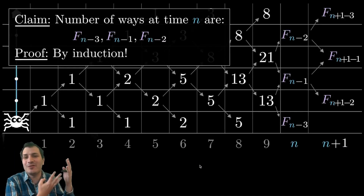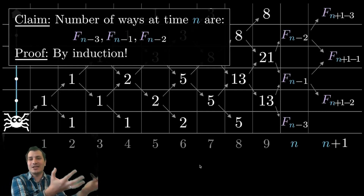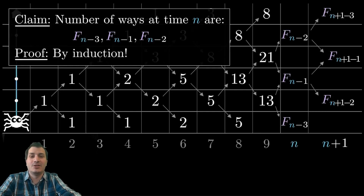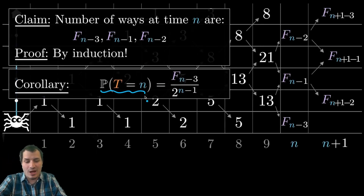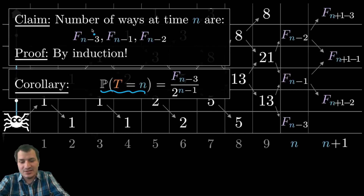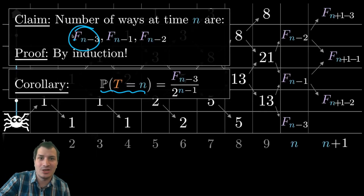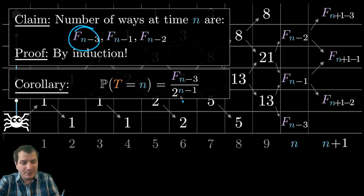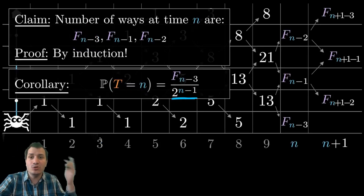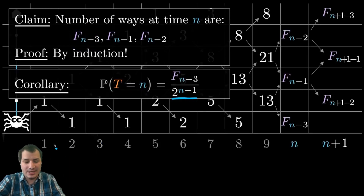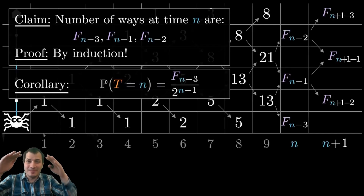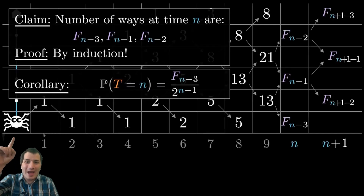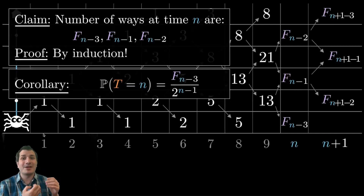We've shown that if it's true at time t equals n, then it automatically will be true at time t equals n plus one, and this will, like dominoes, prove it for all possible n's. We did the base case as well. This explains why the Fibonacci numbers are in this problem. If you know the number of ways are Fibonacci numbers, you can convert to probabilities by dividing by the right power of two. For example, the chance that the spider ends his walk exactly at time t equals n is exactly the smallest of the three Fibonacci numbers, F(n-3), divided by two to the n minus one.